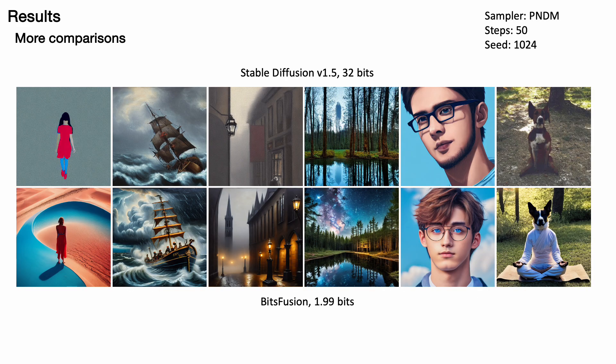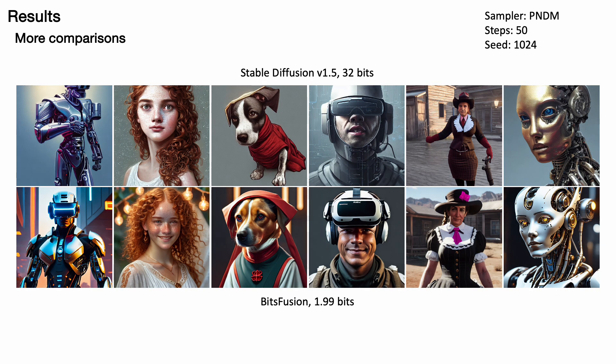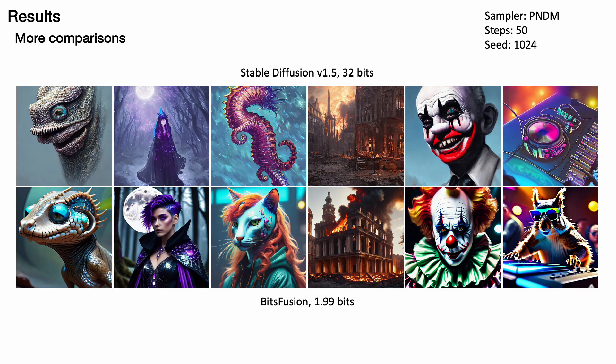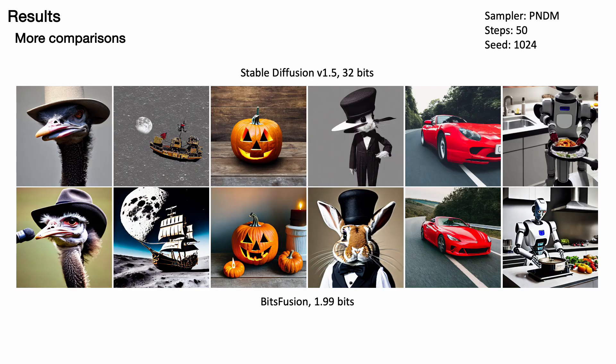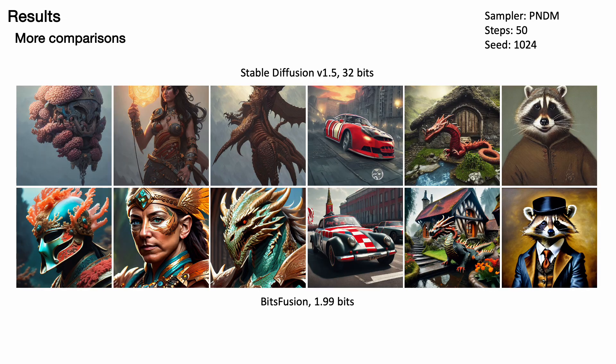Finally, we present additional images for comparison. The images in the top row were generated using the 32-bit stable diffusion model, while those in the bottom row were generated by our 1.99-bit BitsFusion model. Thank you.